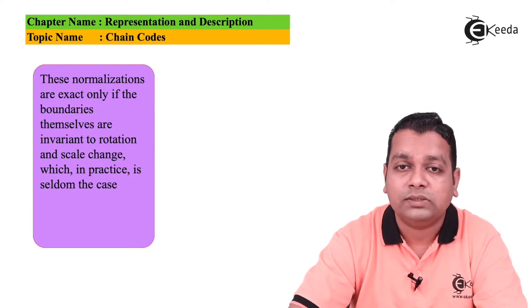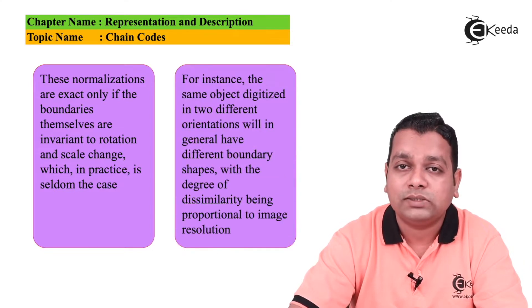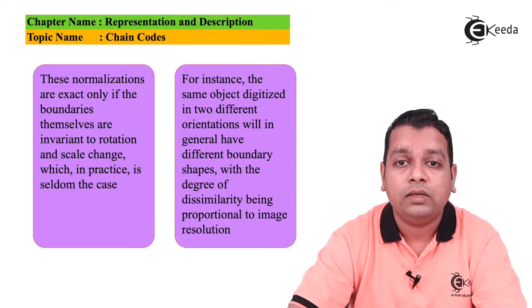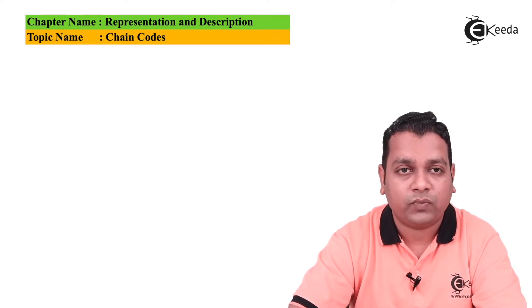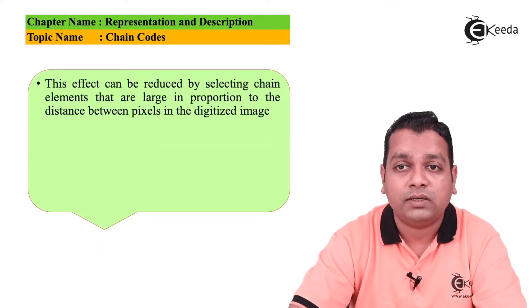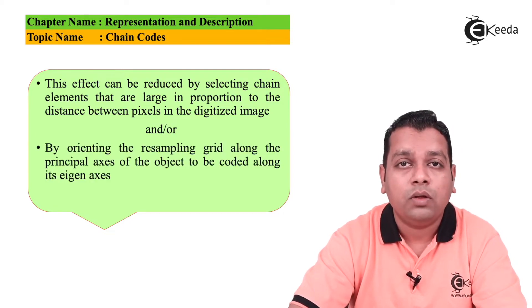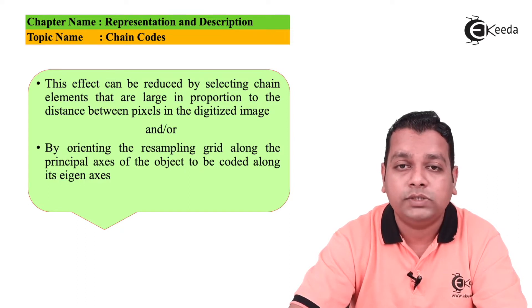These normalizations are exact only if the boundaries themselves are invariant to rotation and scale changes, which in practice is seldom the case found. For instance, the same object digitized in two different orientations will in general have different boundary shapes with the degree of dissimilarity being proportional to the image resolution. This effect can be reduced by selecting chain elements that are large in proportion to the distance between the pixels inside the digitized image and/or by orienting the resampling grid along the principal axis of the object to be coded, along the eigen axis.